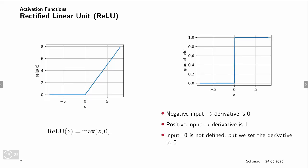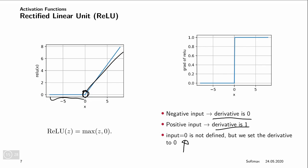The ReLU has a problem: it is not differentiable at zero. It's differentiable everywhere else — in the negative region the derivative is zero, and in the positive region the derivative is one, because we're just returning x. At zero it's not differentiable; however, what we do is just return a zero at that point, and for optimization this will work out just fine.